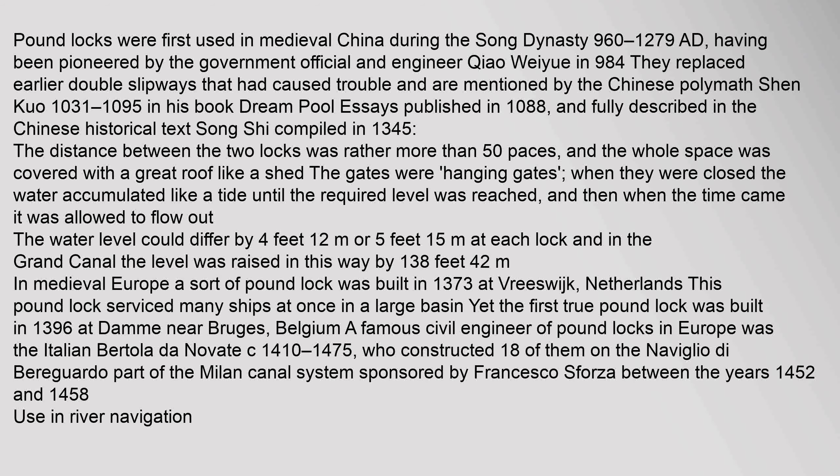Published in 1088 and fully described in the Chinese historical text Song She compiled in 1345, the distance between the two locks was rather more than 50 paces and the whole space was covered with a great roof like a shed. The gates were hanging gates; when they were closed, the water accumulated like a tide until the required level was reached, and then it was allowed to flow out. The water level could differ by four feet.